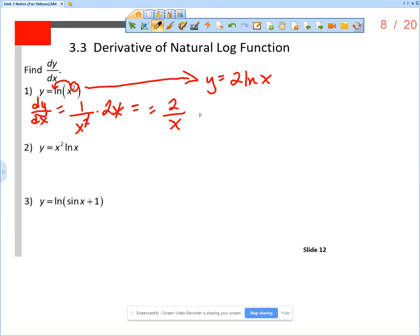Now, if I take the derivative of that version, I get 2 times the derivative of the natural log of x, which is 1 over x. We still get 2 over x, but that would be an alternate method.